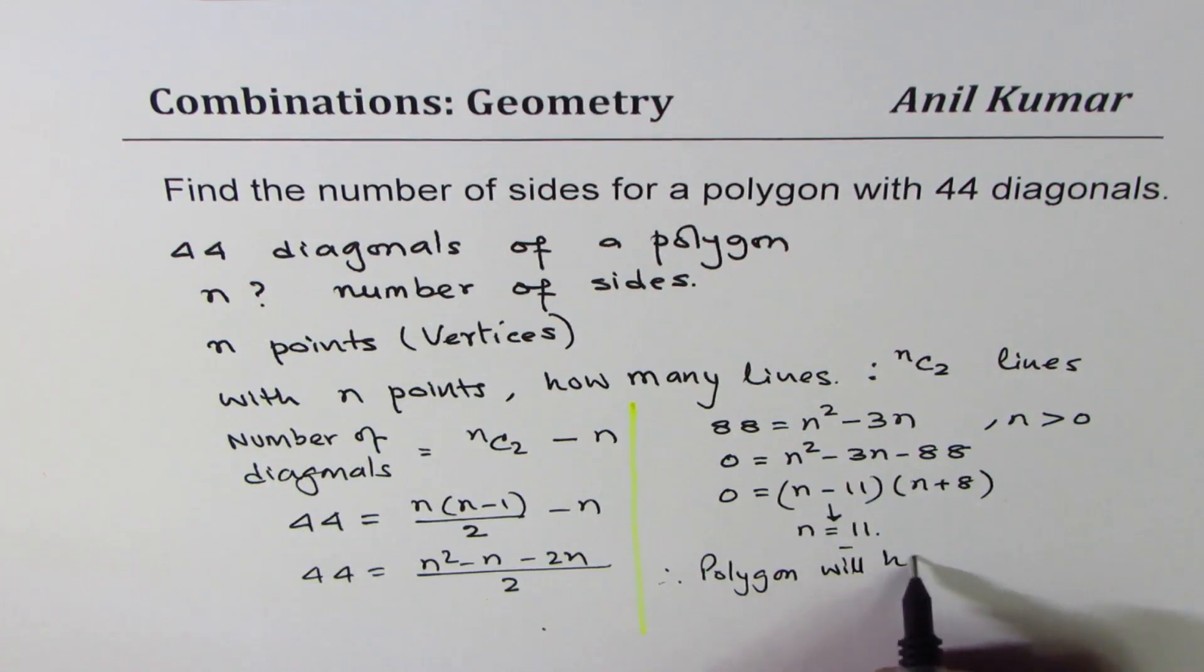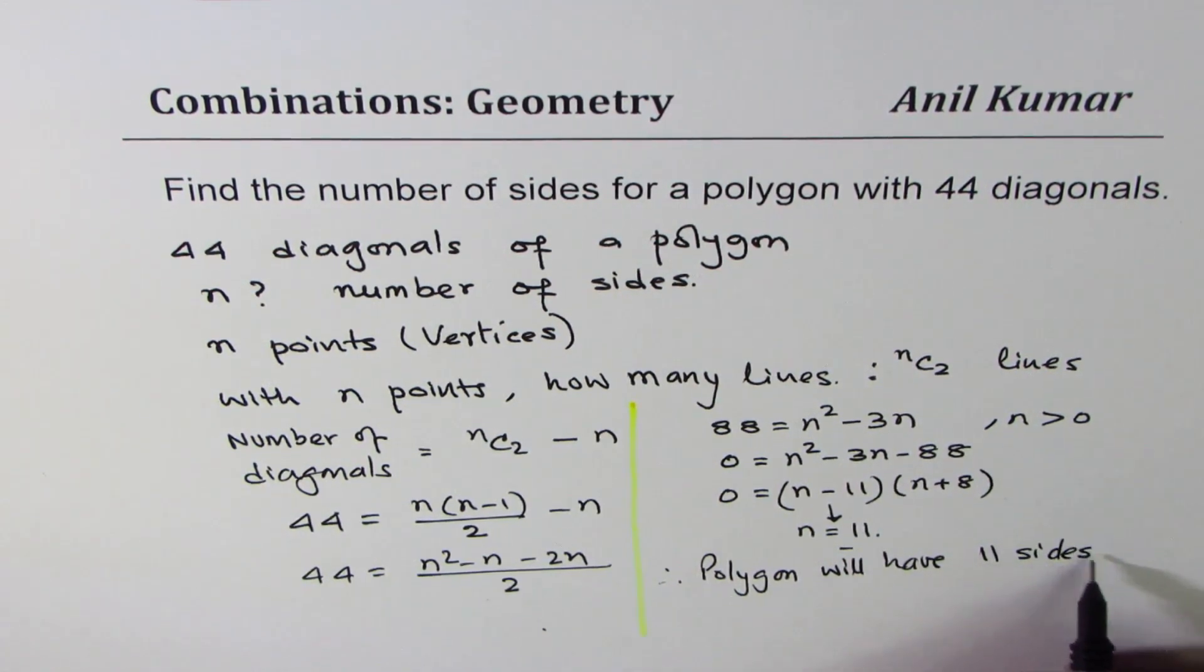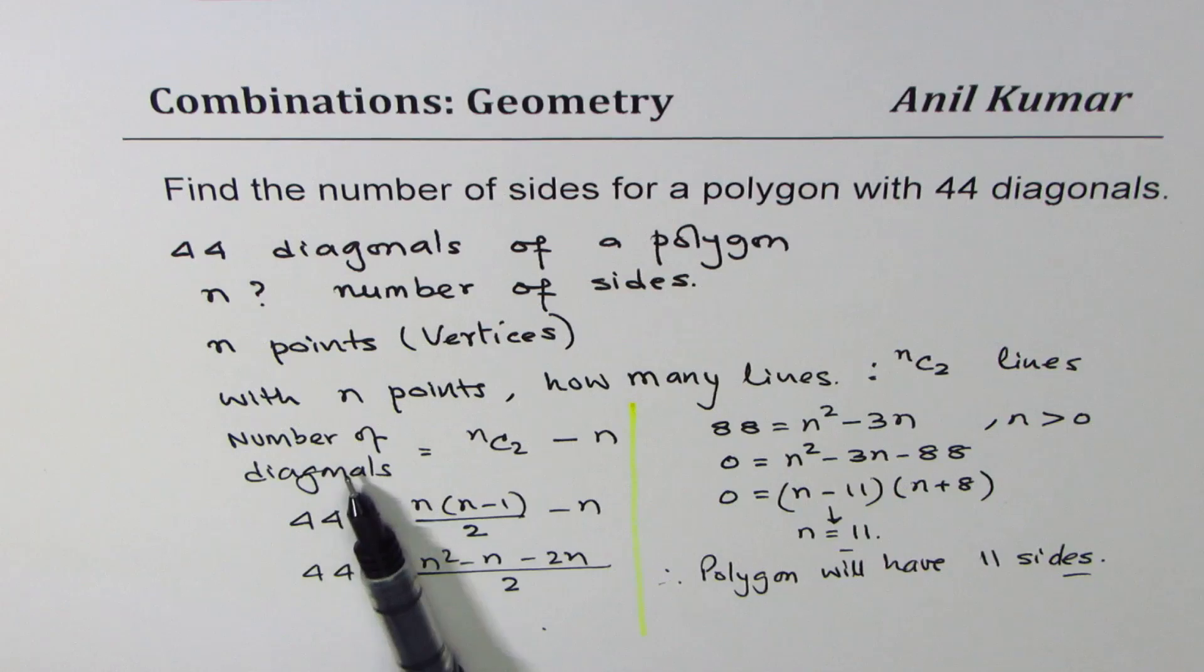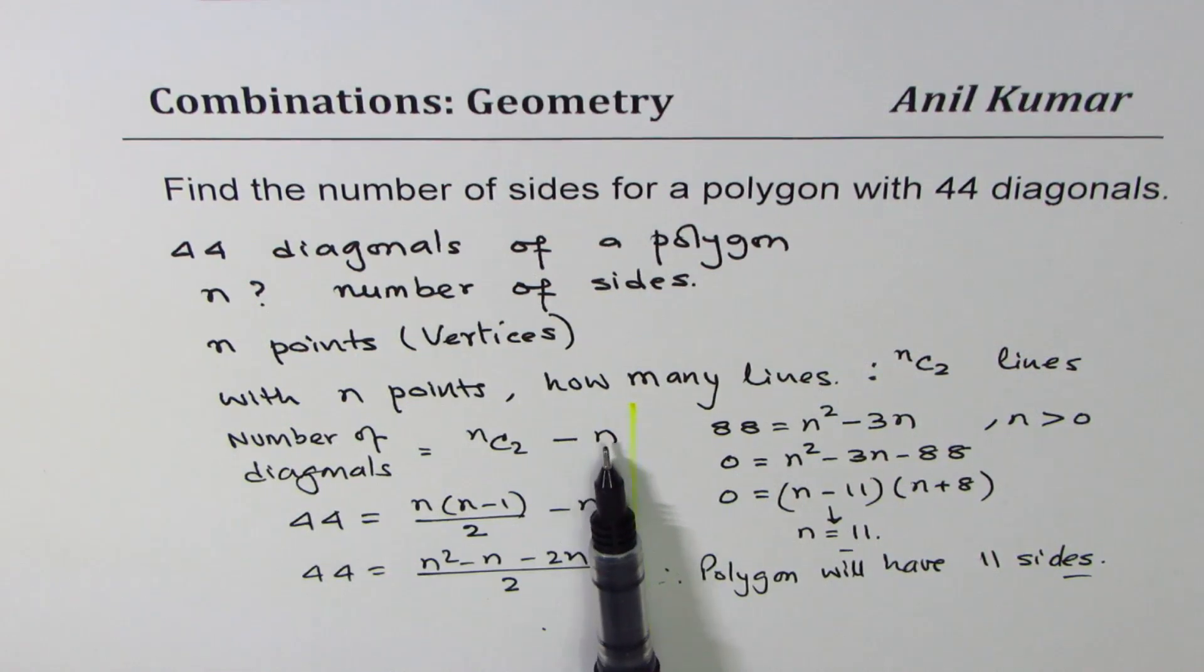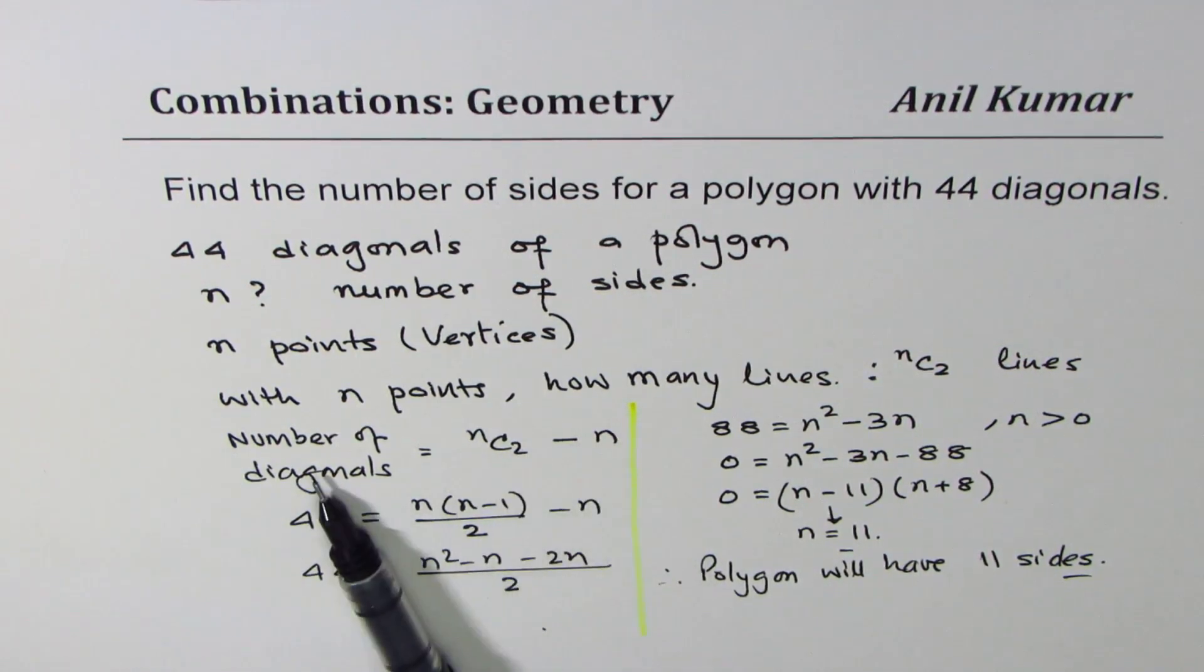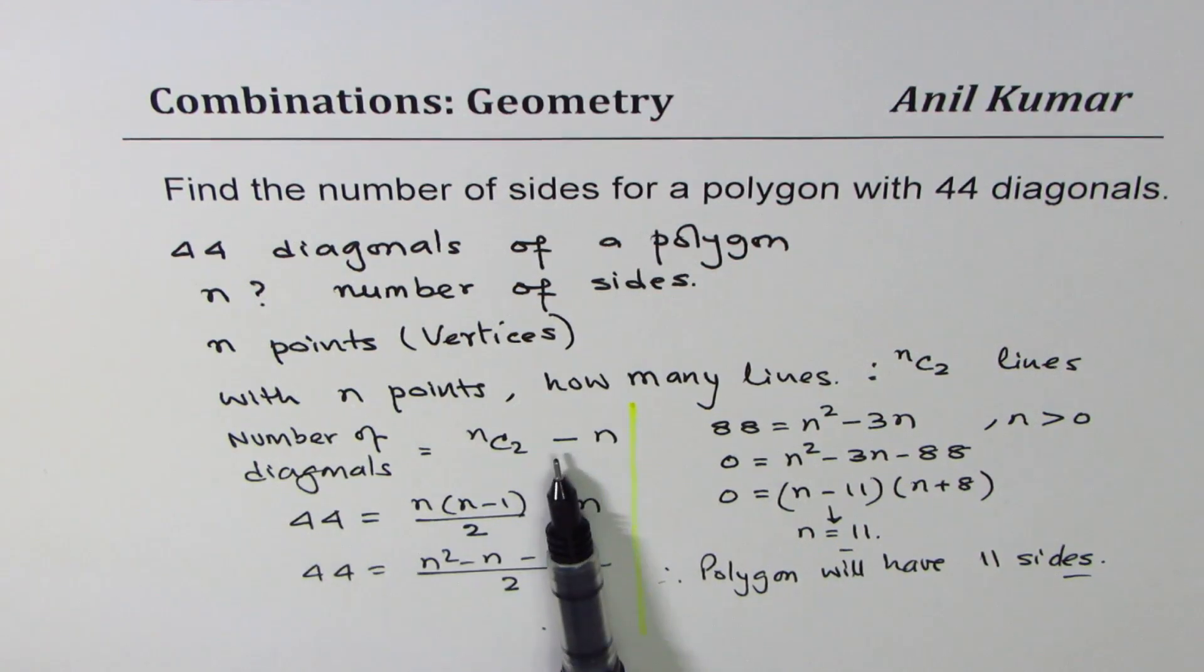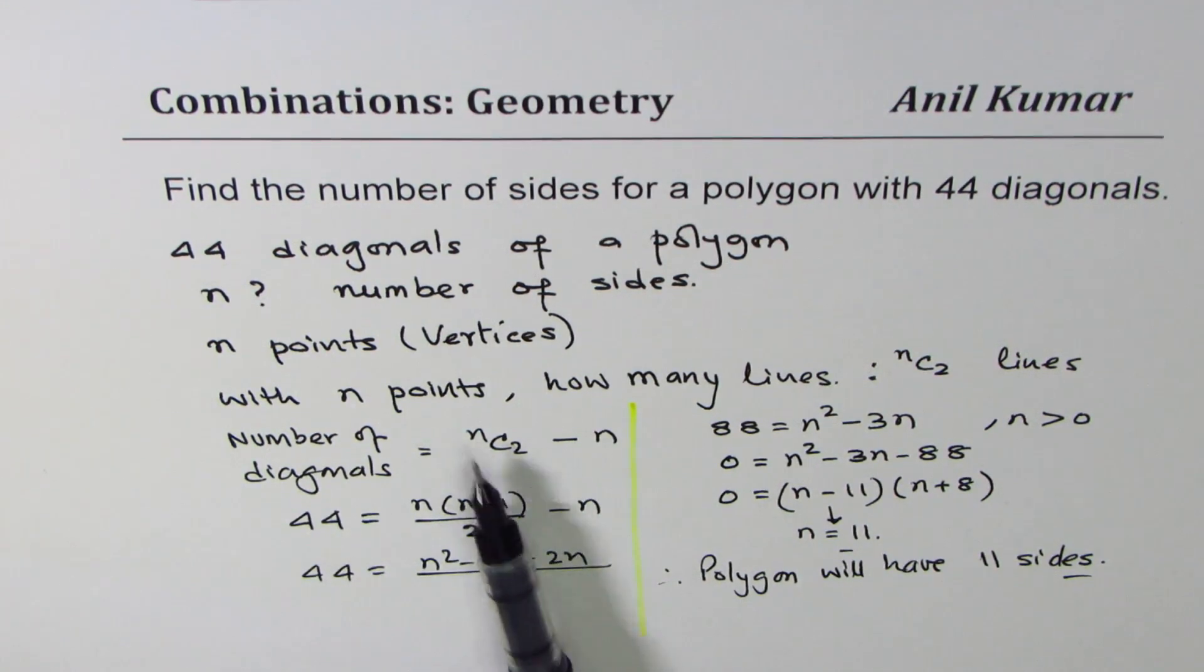So that is how you can solve, right? So the idea here is total number of lines drawn with endpoints is nC2, out of which n are the edges or sides of the polygon, remaining are diagonals. So relating diagonals with this term nC2 minus n, we can actually solve for n and find the number of sides for the polygon.